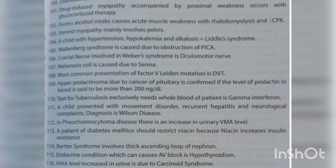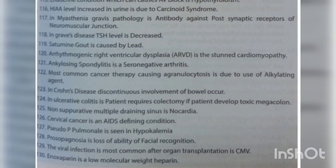In pheochromocytoma, there is an increase in urinary VMA level. A patient of diabetes mellitus should restrict niacin because niacin increases insulin resistance. Bartter syndrome involves the thick ascending loop of the nephron. The endocrine condition which can cause AV block is hypothyroidism. Elevated urinary 5-HIAA level is due to carcinoid syndrome. In myasthenia gravis, the pathology is antibody against post-synaptic receptors of the neuromuscular junction.